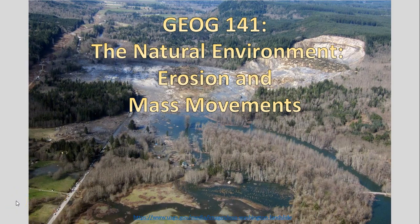We talked about weathering, that breakdown of material, and now we're going to continue on and more specifically focus on erosion — actually moving this material — and specifically focus on some different types of mass movements, moving a lot of material at one time. We'll come back to the example in the background of the Oso landslide that occurred up in Washington State in 2014, one of the most deadly landslides in the United States in the historical record. We'll talk about the processes tied to that, why it occurred, and more generally some issues around these mass movements and their hazards.